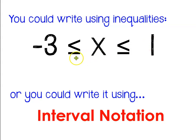Now, if negative 3 is a possibility, you would use this equal to sign. And if 1 was a possibility, you would use this equal to sign. But what we're going to learn in this lesson is how you could write it using a different notation. It's called interval notation.